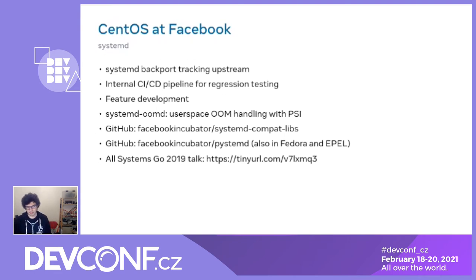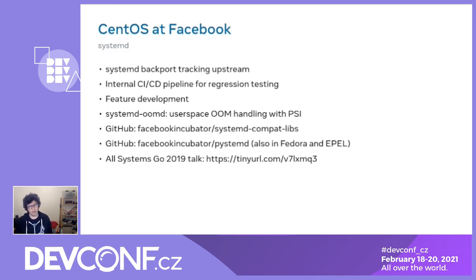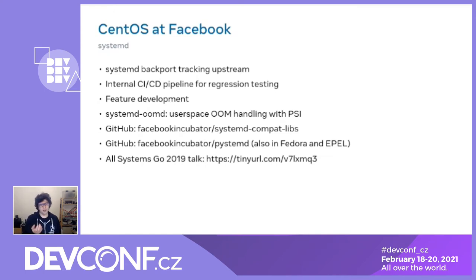systemd-oomd is a new kind of user-space OOM killer that leverages PSI. The way it works is that while your system is running, it figures out if a process is about to spill over and invoke the OOM killer, and deals with it before that actually happens — so it can act in a much more precise way and avoid bringing down your whole system. We are running this in production at Facebook now, and it's already merged in systemd upstream as of version 246.